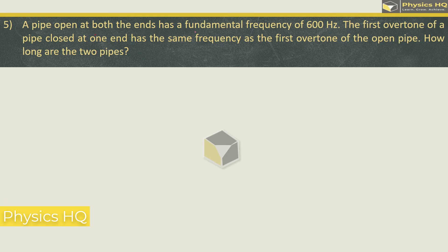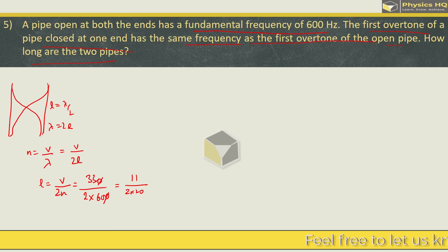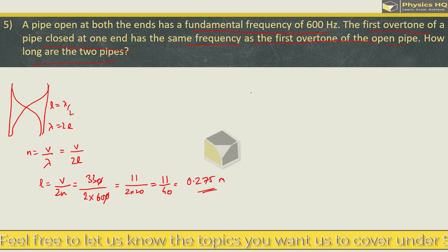A pipe open at both the ends has a fundamental frequency of 600 Hz. The first overtone of a pipe closed at one end has the same frequency as the first overtone of the open pipe. How long are the two pipes? Now let's see the first scenario. Once again same, open at both ends, this waveform will come. Here you have a length lambda by 2, or you can say lambda is 2L. So this is the frequency formula, V by lambda, and we can write 2L. Or if we rearrange it, this will be V by 2N. V we take as 330 and divide it by 2 into frequency which is 600. If we divide by 3, then it will be 11 upon 40. When we solve this, we will get 0.275 meter. Hope you all understood this.